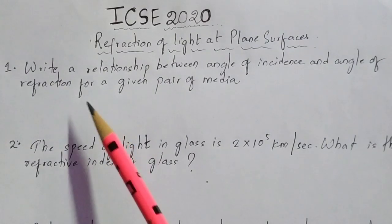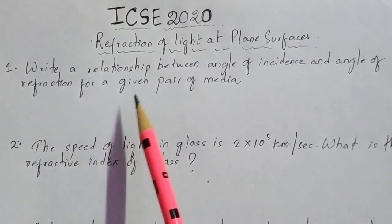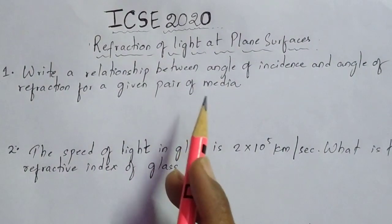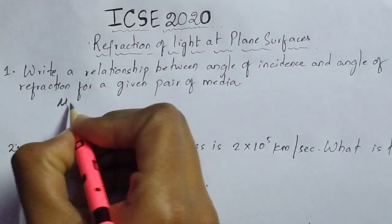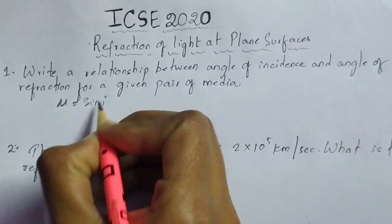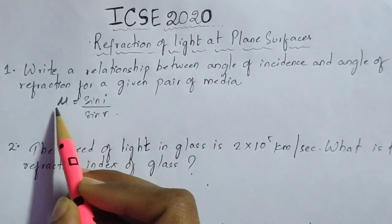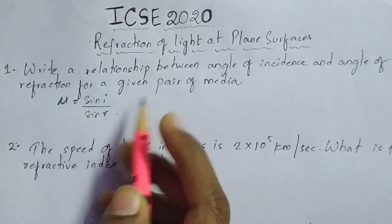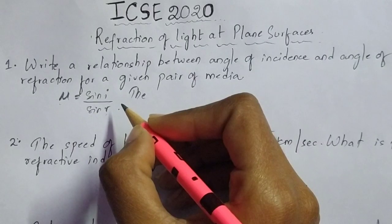The first question is: write a relationship between the angle of incidence and the angle of refraction for a given pair of media. The relationship between angle of incidence and angle of refraction is given by this equation: mu is equal to sin i divided by sin r. Here mu is the refractive index, sin i is the angle of incidence, and sin r is the angle of refraction. This is one of the laws of refraction.